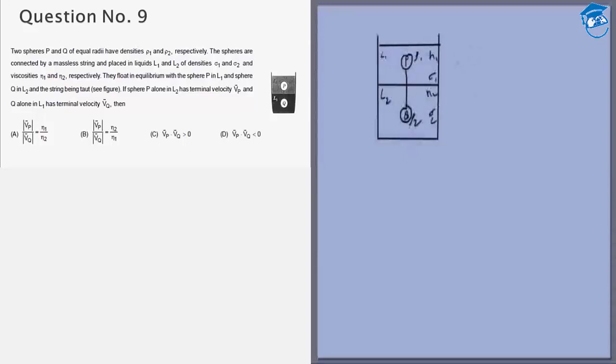If P is kept in L2 it will experience a force of buoyancy upwards and a gravitational force downwards and a drag force. Now P is lighter than L1, that's why it is floating, and L1 is lighter than L2, so P is definitely lighter than L2, which means P will end up going upwards.